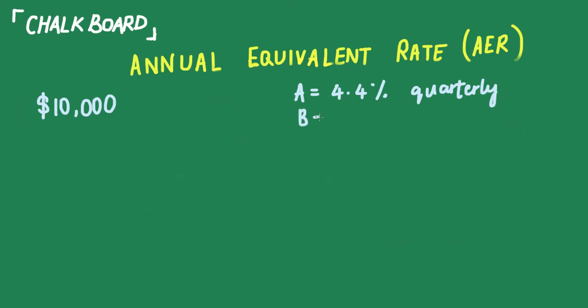You have Firm B that provides you with the same rate of interest, 4.4%, but this one is compounded six-monthly.